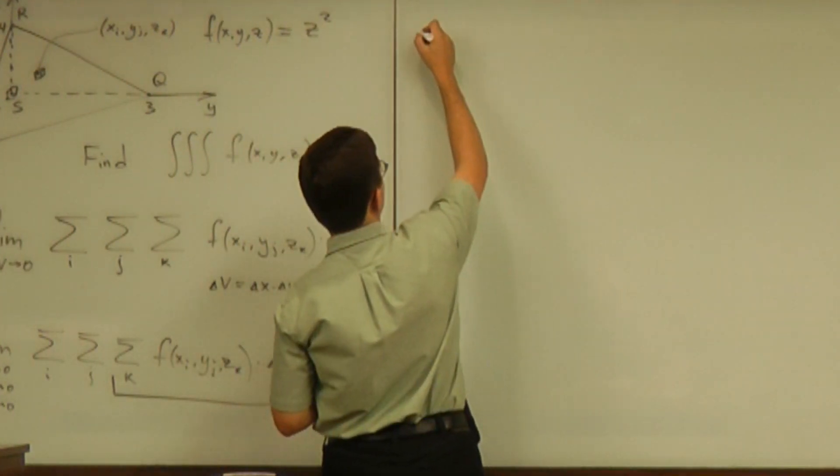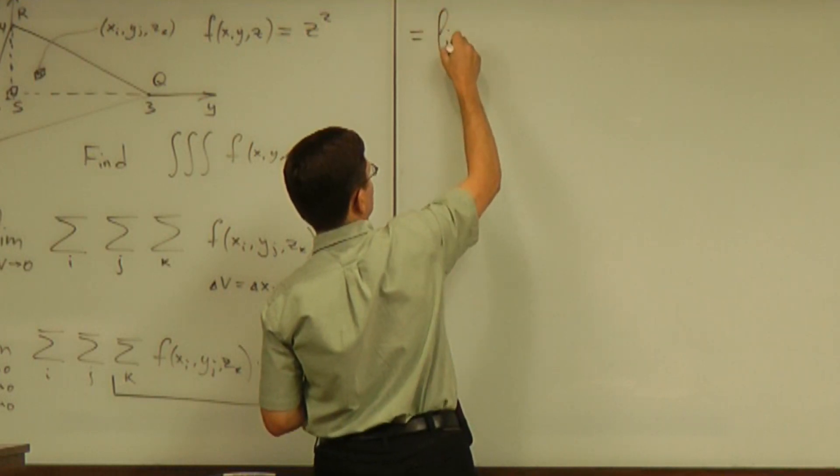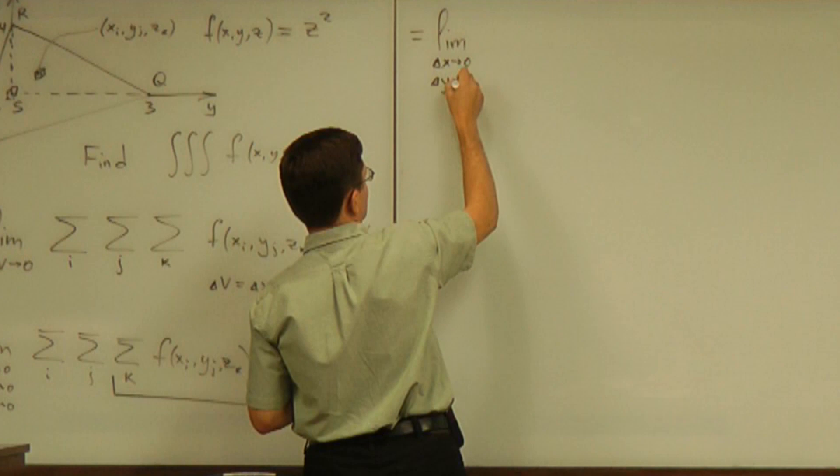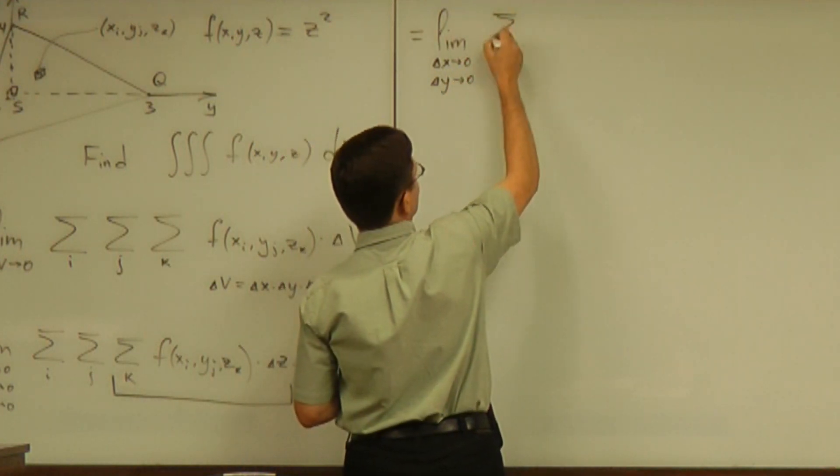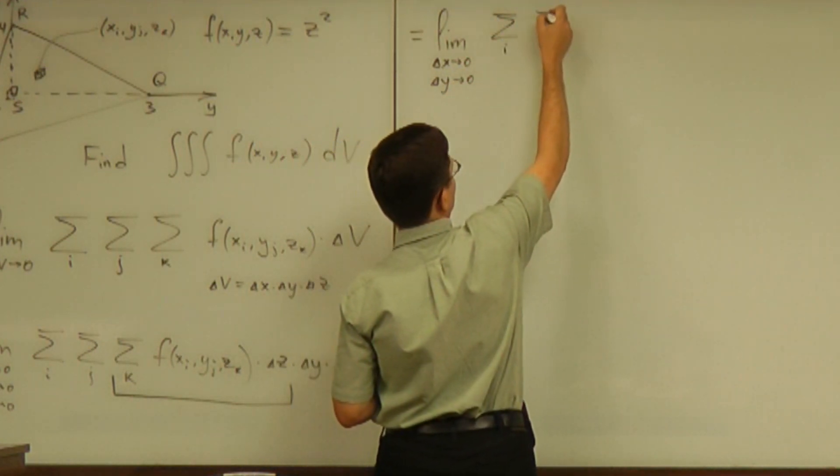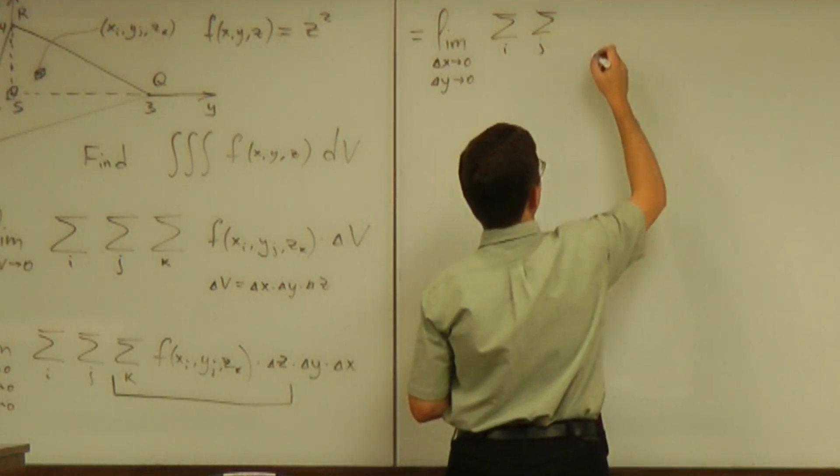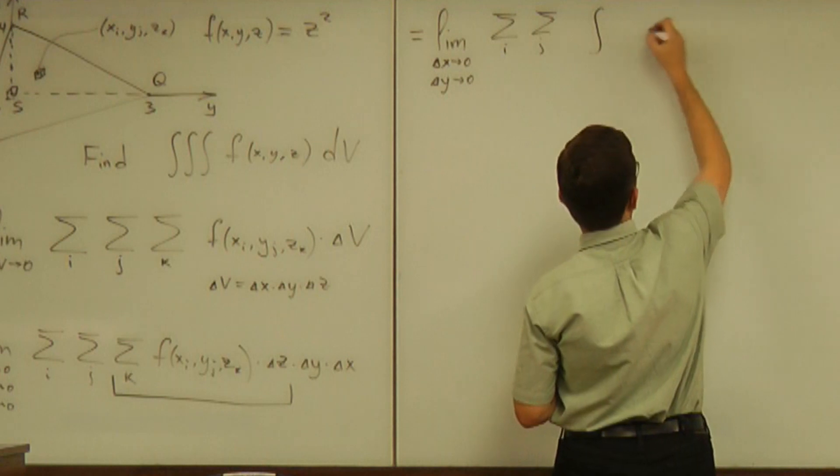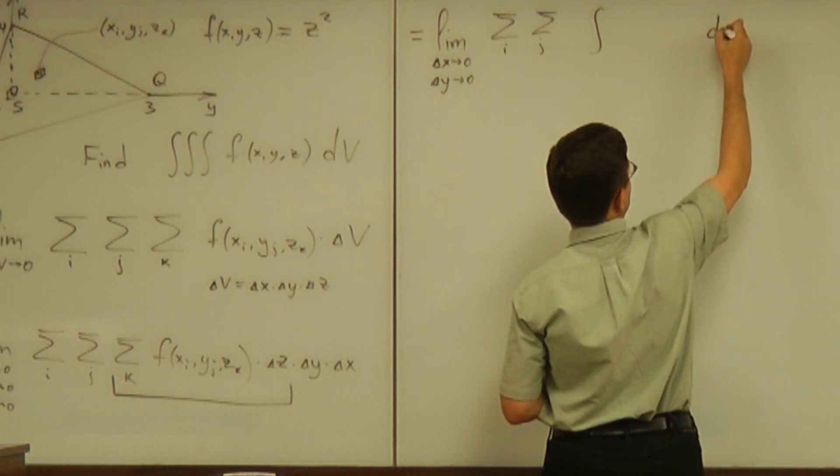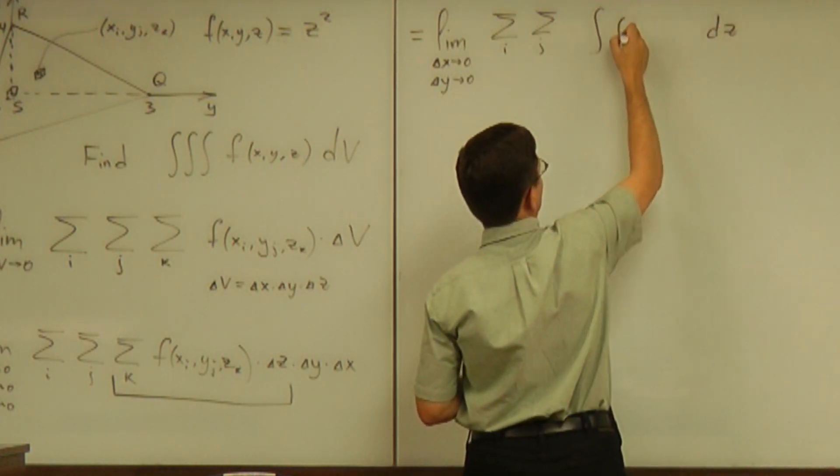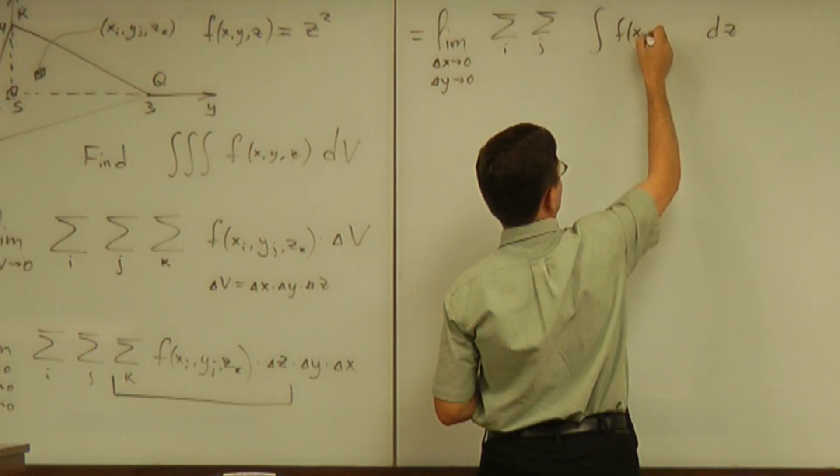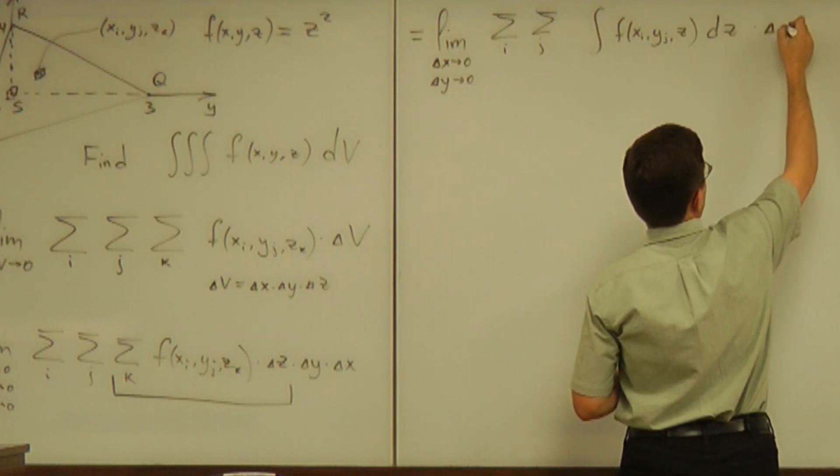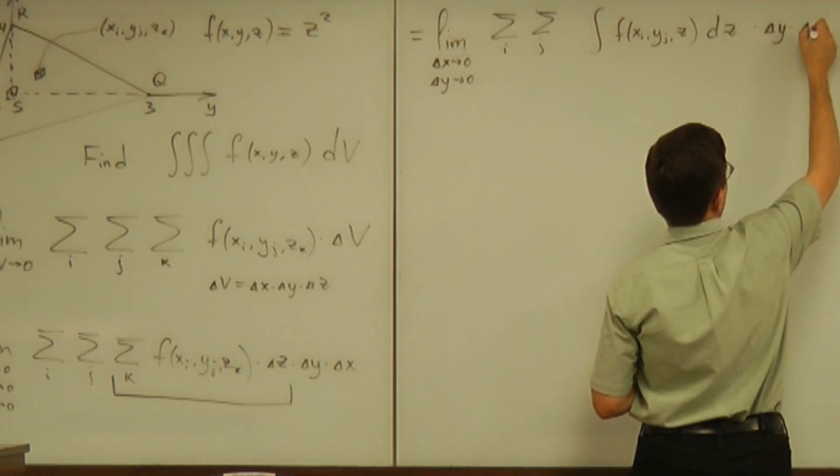And I end up having limit as delta x goes to zero delta y goes to zero of sums over i and j of integrals with respect to z of a function f of xi yj and z times delta y times delta x.